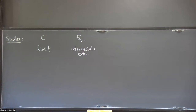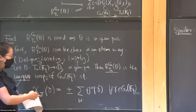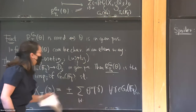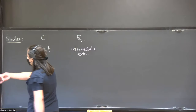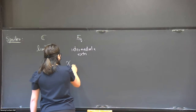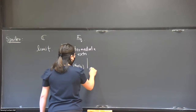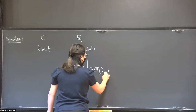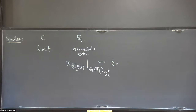So even though the character of this representation is known by Deligne-Lusztig, it's not as simple to understand outside the regular semisimple locus. What we can say is that outside the regular semisimple locus, the character values are actually controlled by geometric phenomena — specifically, they are determined by intermediate extension.